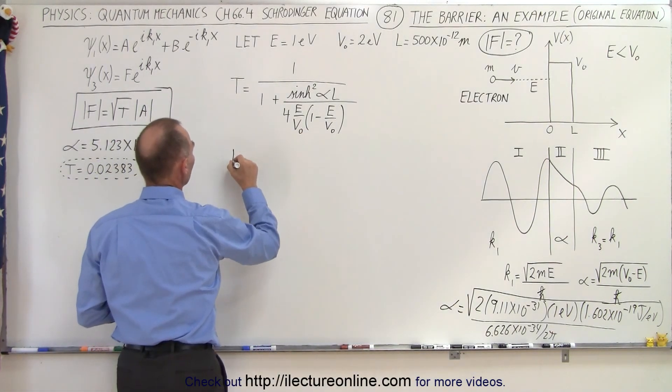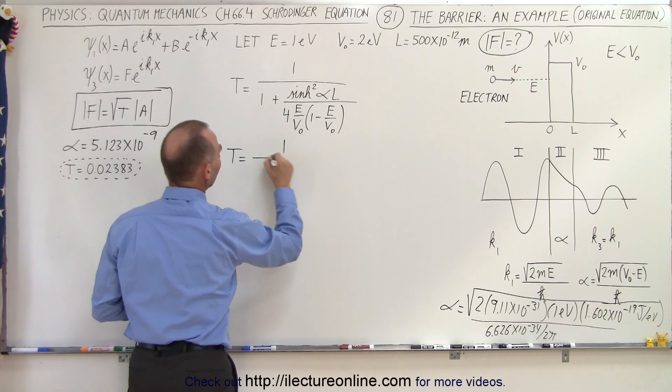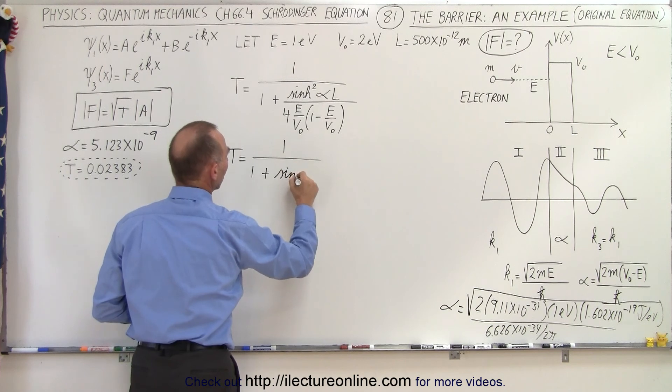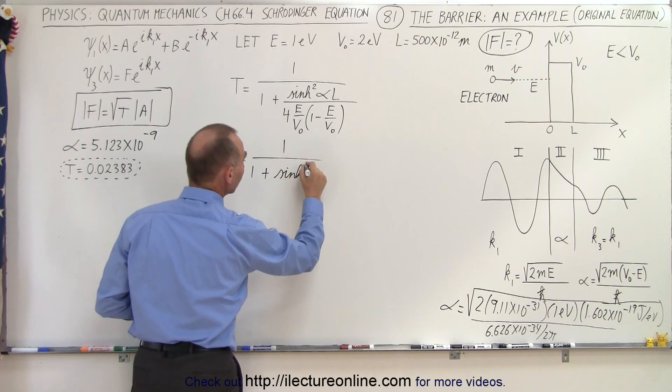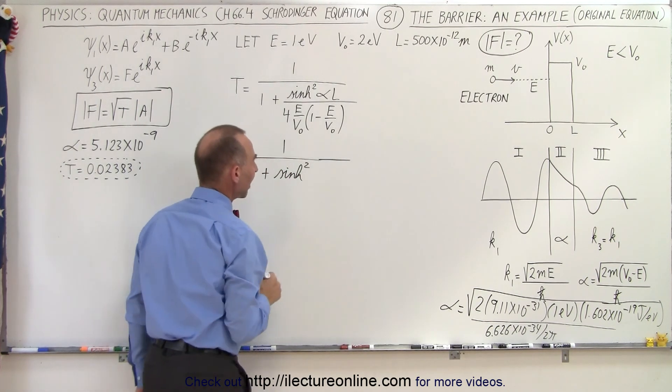So the transmission coefficient is equal to one divided by one plus the hyperbolic sine squared of alpha times L.